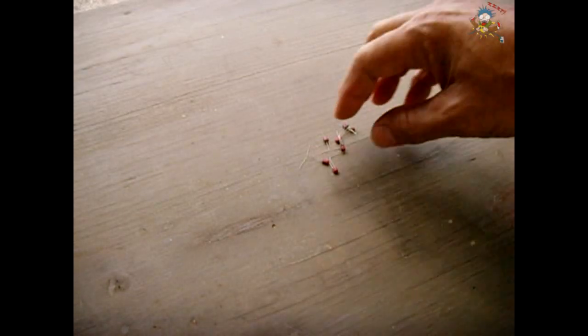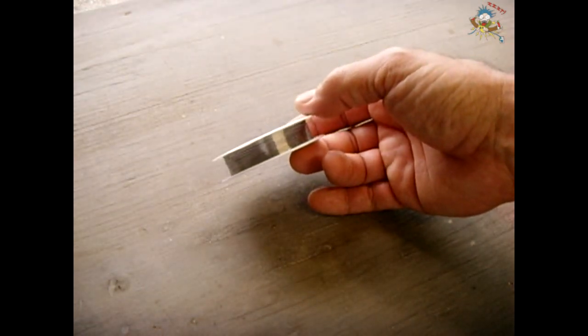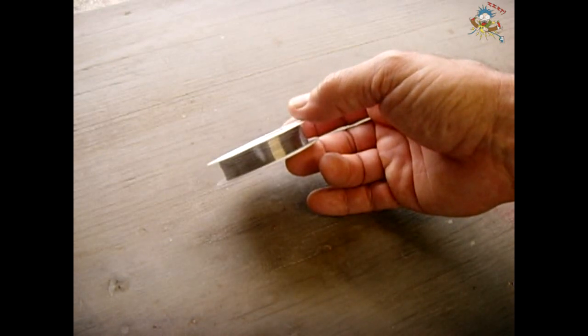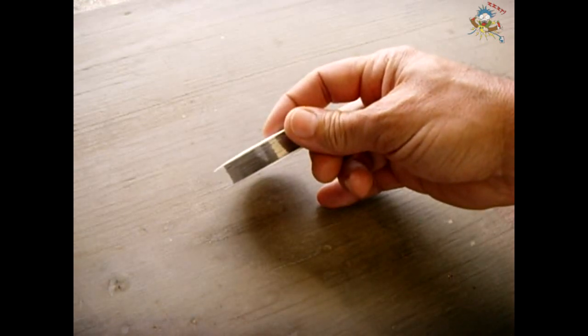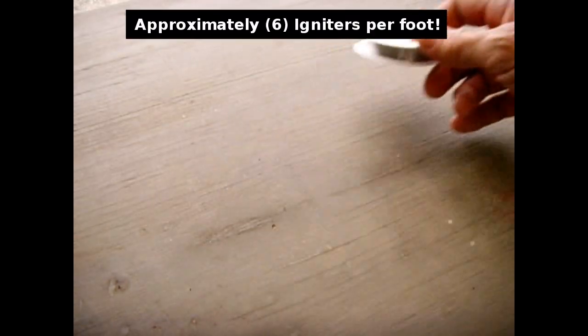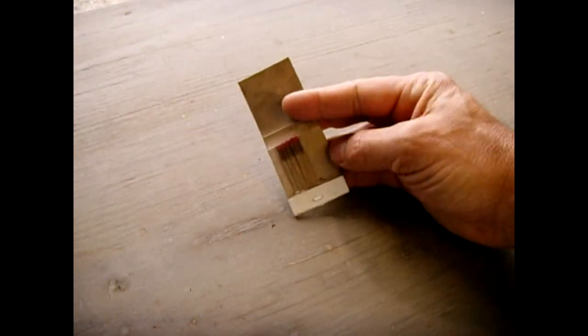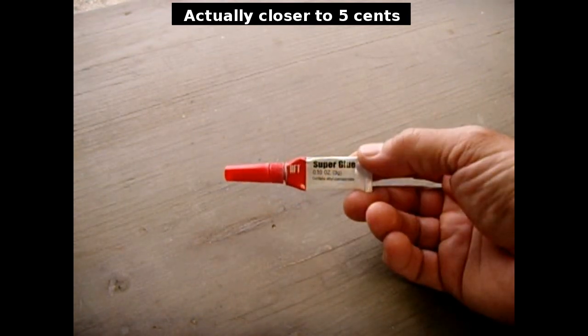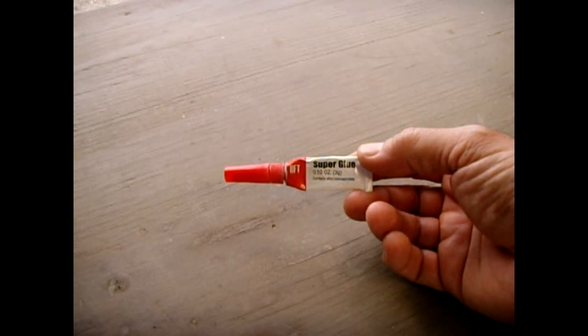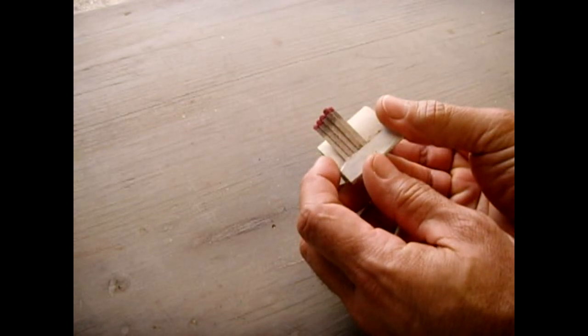Now in order to make these igniters you're going to need a roll of Kanthal A1 resistive wire, 32 to 34 gauge is just fine. This right here is 100 feet and it only cost me $4 shipped, so just imagine how many you could make with this roll. You're also going to need a cheap book of matches, a book of matches only costs around 10 cents, and you're going to need a little bit of crazy glue as well. You could pick these up in the dollar store, four in a pack for one dollar.